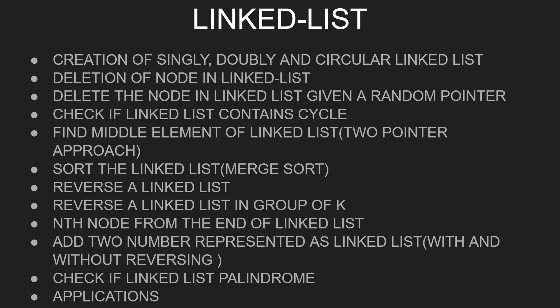Jumping to the linked list. You should know the creation of all types: singly, doubly, and circular linked list — including single circular and doubly circular. Then deletion of a node in a linked list. A new popular question is deletion of a node given a random pointer to that node — you don't need to traverse. Check if a linked list contains a cycle. Find the middle element using the two-pointer approach. Sort the linked list using merge sort. Reverse a linked list, and also reverse a linked list in groups of k — for example, reversing elements in pairs rather than the whole list at once.